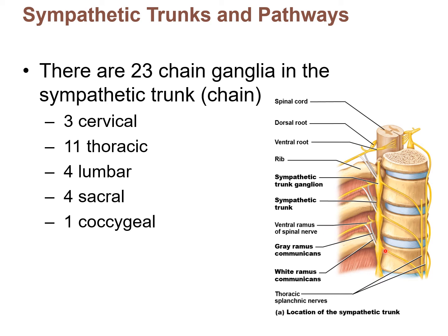Looking at the chain ganglia here, we can see it's made up of all of these ganglions — ganglia, or ganglion singular. There's actually 23 of them. You can only see three here, but it's a long chain of 23 ganglia. Three are in the cervical, 11 are in the thoracic, and so on. I'm not going to hold you to these numbers. Just realize that it's a lot longer than you see here, and occurs on both sides of the spine.